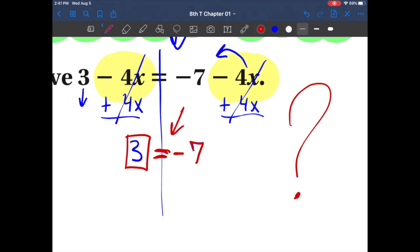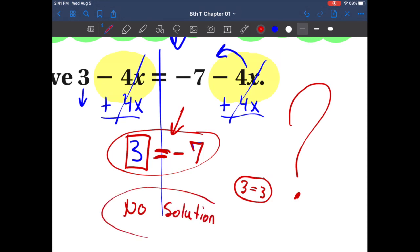It doesn't. When you see something like this when you're like, well you know, 3 cannot equal negative 7. 3 can only equal 3. That's correct, but 3 equaling negative 7, that means there is no solution to this problem. And you will see questions like this and they will have the answer that says no solution.